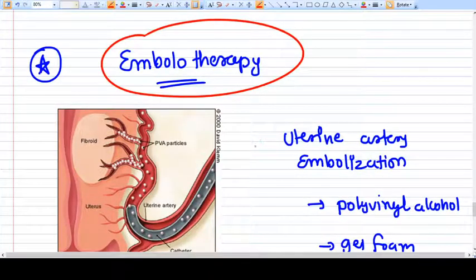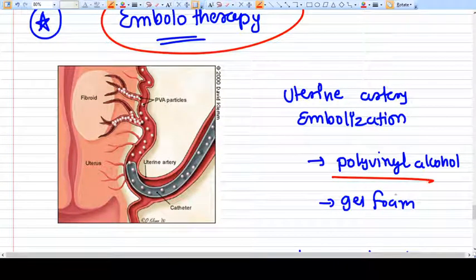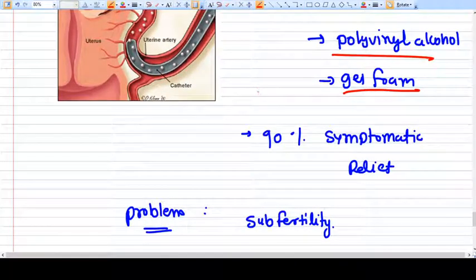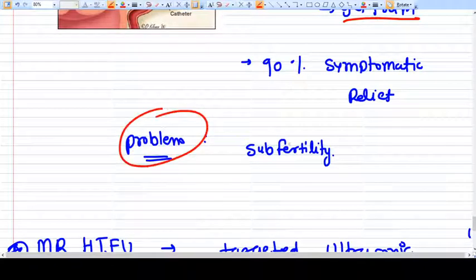So this is again a risk factor, it's not easy. Now let's talk about new treatment that is embolotherapy. In embolotherapy, it is just like uterine artery embolization. What we do, we inject this polyvinyl alcohol and gel form of structures into the vessels which supply the fibroid, so it can decrease the size and improve the symptom.